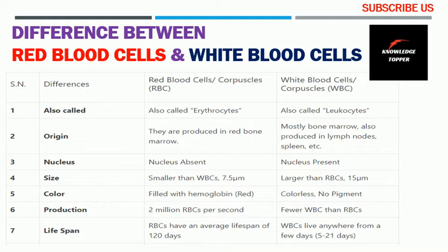Red blood cells are produced in red bone marrow. Talking about white blood cells, they are produced in lymph nodes, spleen, and mostly in bone marrow. The third basis for comparison is the nucleus — in red blood cells, the nucleus is absent, while in white blood cells, the nucleus is present.